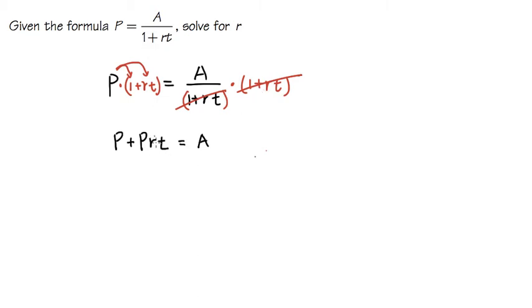Our goal is to get the r by itself. I'm going to subtract the P, this P on both sides. So this and that will cancel, and we will have Prt is equal to A minus P.